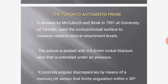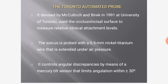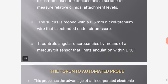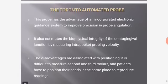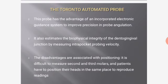The Toronto automatic probe, devised by McCulloch and Birek in 1991 at the University of Toronto, uses the occlusal/incisal surface to measure relative clinical attachment levels. The sulcus is probed with a 0.5 mm nickel-titanium wire extended under air pressure. It controls angular discrepancies using a mercury tilt sensor limiting angulation within 30 degrees. Advantages include an incorporated electronic guidance system for probe angulation precision and estimation of dento-gingival junction biophysical integrity by measuring inter-pocket probing velocity. Disadvantages include difficulty measuring second and third molars and the requirement for consistent head positioning.